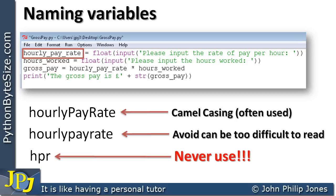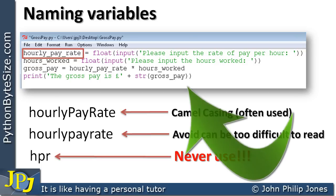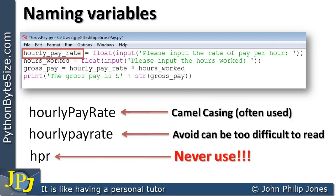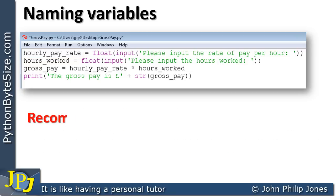When somebody else reads your code, they're not going to know what abbreviations mean. If you look at this program, it doesn't take much imagination to realize it's something to do with people being paid, because we're using hourly pay rate, hours worked, and so on. When you choose the names of variables, you do so for a reason — it's to make your program easier to understand.